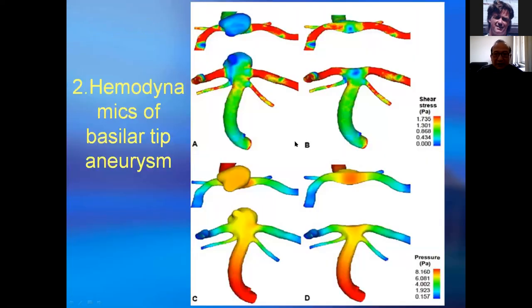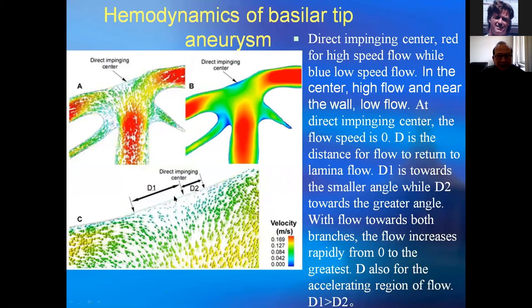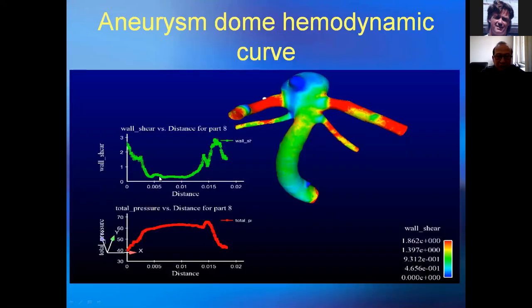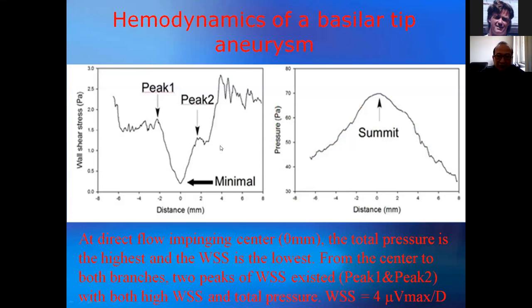This is another aneurysm at a basal bifurcation wall — before and after aneurysm removal. After the aneurysm was removed, the bifurcation wall has very high total pressure compared to before removal, and also high shear stress. Drawing a line across the aneurysm wall, on the aneurysm itself, the shear stress is very low but the total pressure is very high.